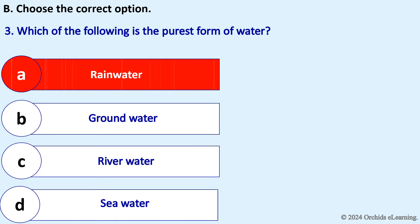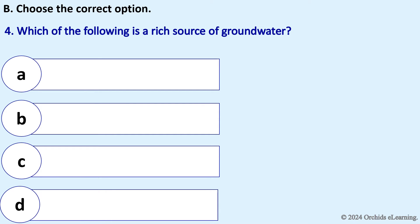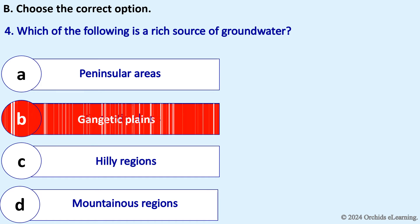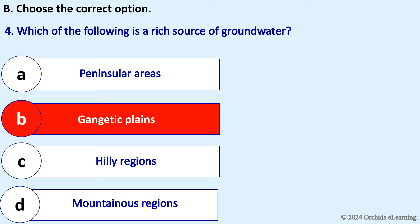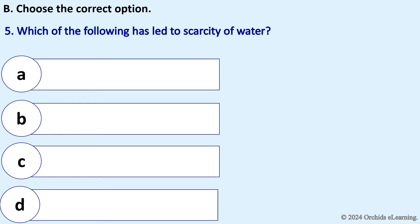Which of the following is the purest form of water? Answer: Rainwater. Which of the following is a rich source of groundwater? Answer: The Gangetic plains.